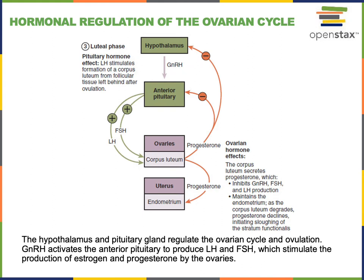Following ovulation, the remnant of the ovarian follicle is called the corpus luteum. The corpus luteum produces the steroid hormone progesterone in response to luteinizing hormone — which is where the name luteinizing hormone comes from. Progesterone binds to receptors within cells throughout the body; in the uterus it helps maintain the endometrium and stimulates secretion of the uterine glands. In the hypothalamus and anterior pituitary, progesterone exerts a negative feedback mechanism to decrease the production of GnRH, LH, and FSH.